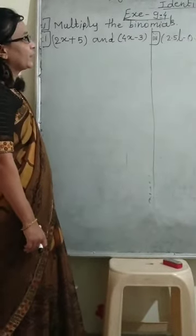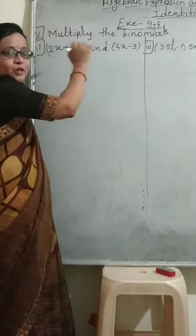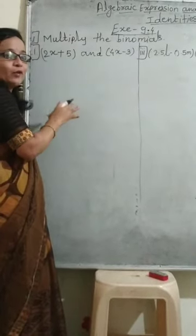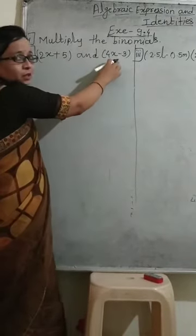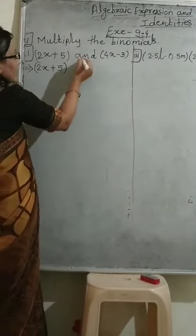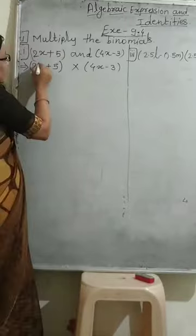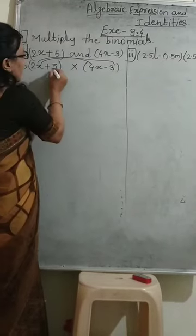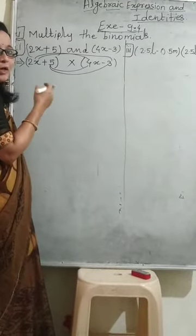We started the chapter Algebra Expressions and Identities. In Exercise 9.4 we are going to start, and the first question is to multiply the binomials. Multiply the binomials means two expressions are given and those expressions are binomials. Those two binomials we have to multiply with each other. That is the way we are going to do the multiplication of binomials.